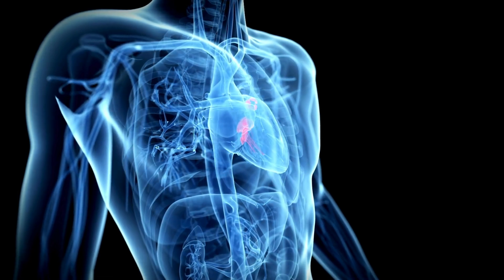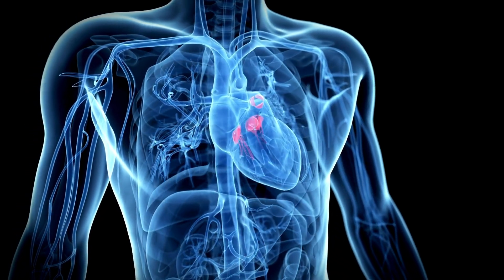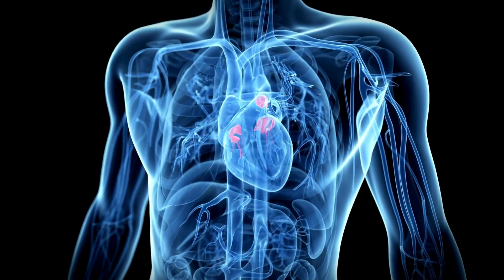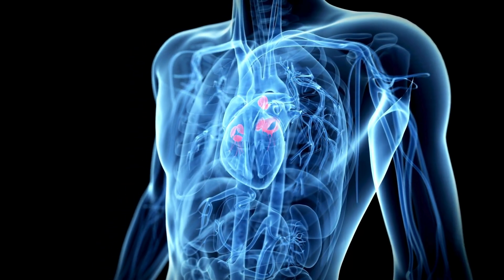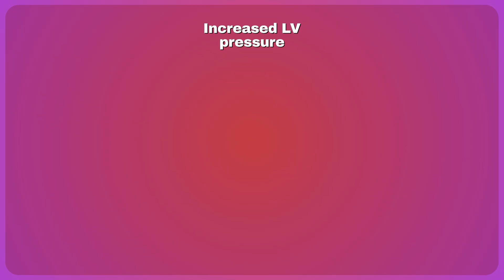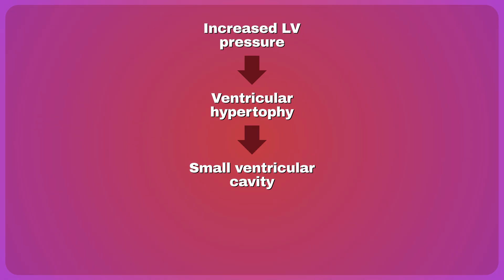The constantly high afterload in aortic stenosis leads to compensatory changes that are initially adaptive but become maladaptive over time. The left ventricle needs higher pressures to push blood past the narrowed valve, so the heart muscle starts to hypertrophy — like any muscle worked out very hard. As the myocardium hypertrophies, it bulks inward, making the ventricular space smaller, which decreases the blood volume that can fit inside. This reduces stroke volume and cardiac output, and the heart becomes less able to fill — a condition called diastolic dysfunction.